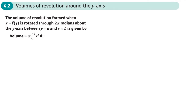This is the second section of chapter 4, Volumes of Revolution, and this is Volumes of Revolution around the y-axis. Just like Volumes of Revolution around the x-axis, this is something we've already encountered in core 1.